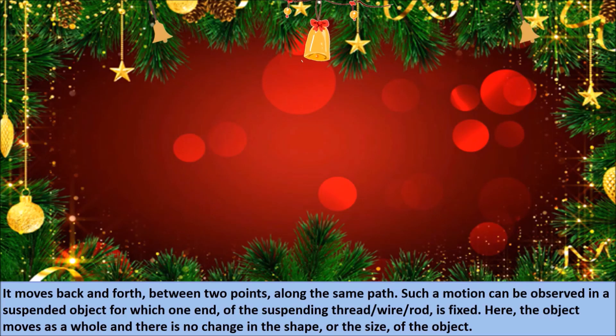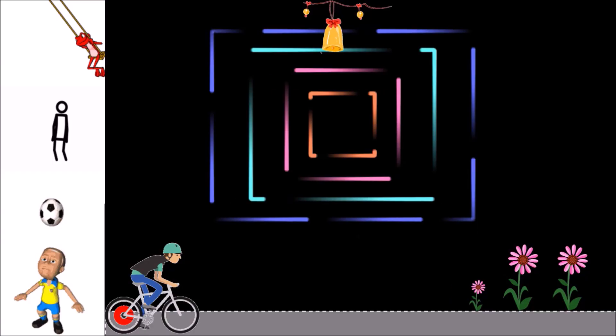It moves back and forth between two points along the same path. Such a motion can be observed in a suspended object for which one end of the suspending thread, wire, or rod is fixed. Here, the object moves as a whole and there is no change in the shape or the size of the object.